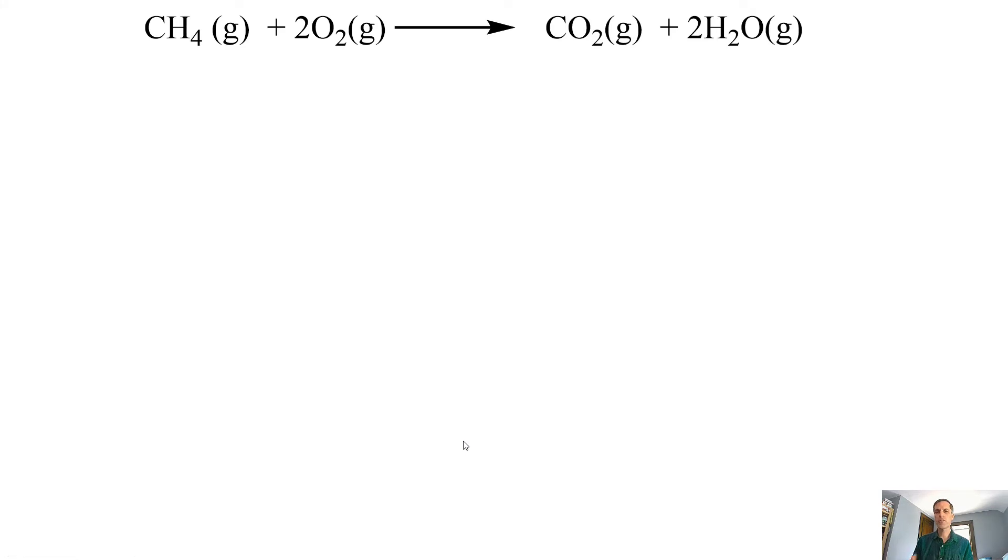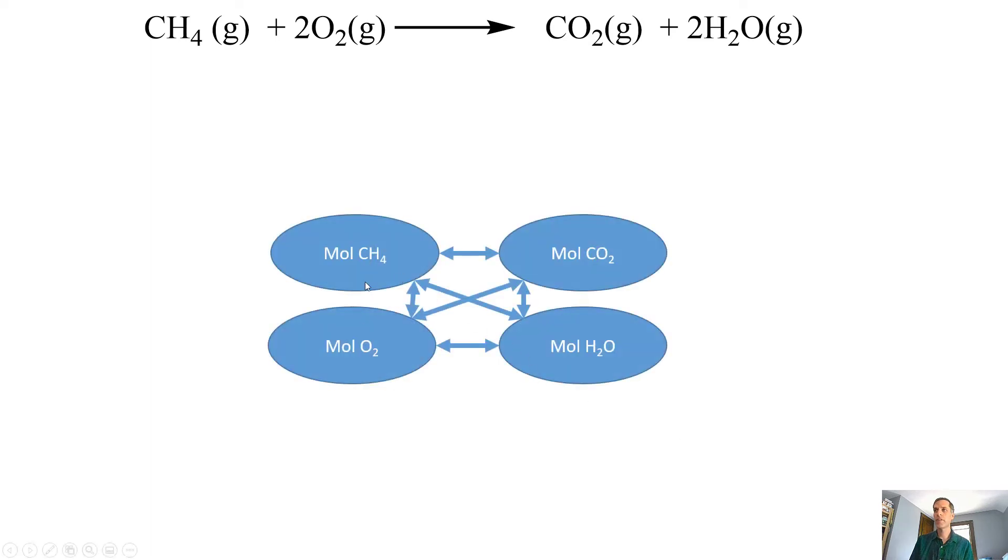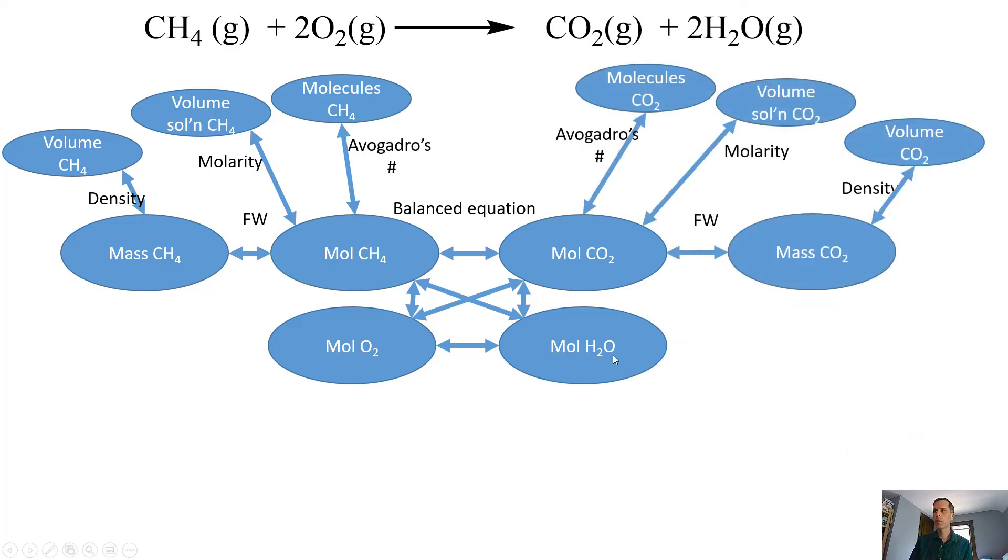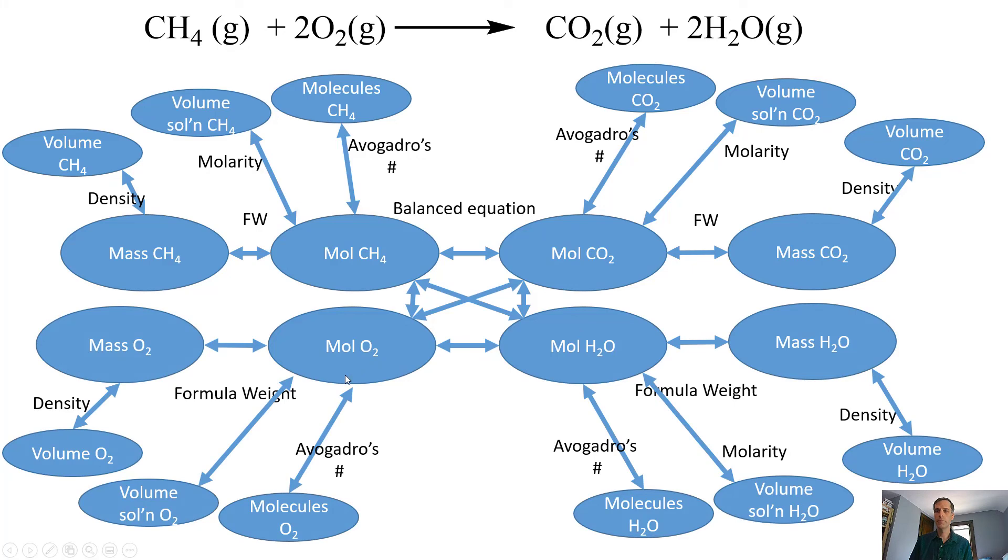What we see is that there's a lot of different relationships that we have here. When we have this balanced chemical equation, we actually know we could go between any of the different species that are involved here: between methane and oxygen or reactants and CO2 and water, the products. If we think about the methane, we know that we can get to mass of methane using the formula weight, and then we can get to the volume if we had the density. If this was in a solution, we could use the molarity, or we could use Avogadro's number to figure out the number of molecules. Not only can we do that for methane, but we can do that for CO2, for water, and also for O2. We actually get this really big complex web of all these different kinds of things that could be asked.